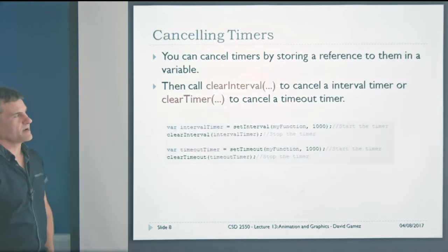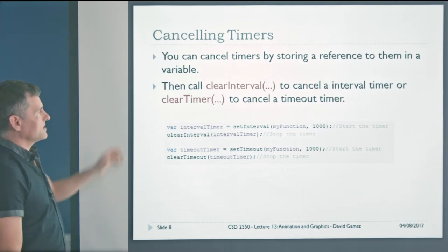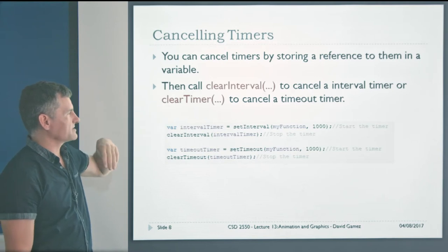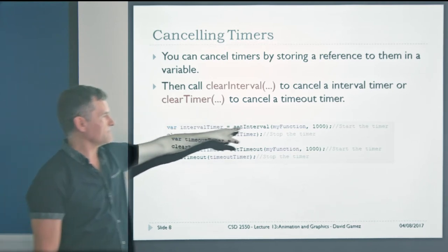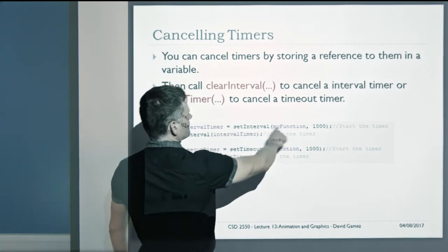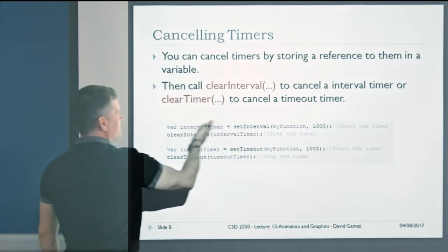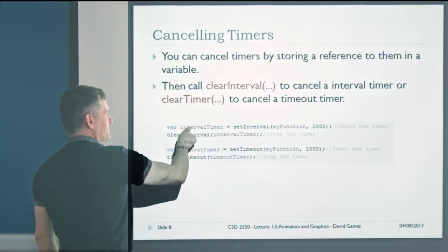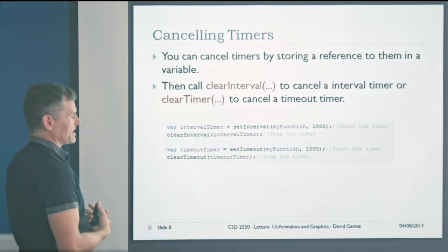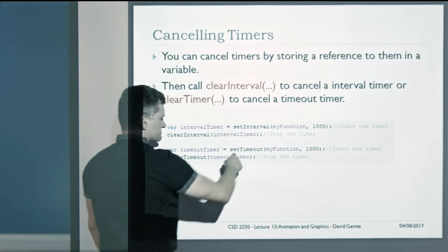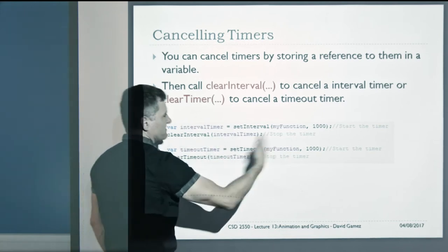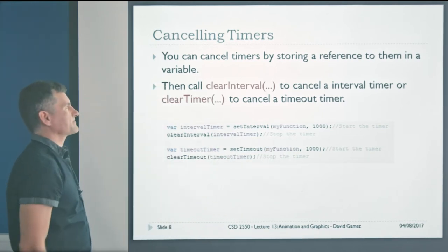We can cancel timers if we store a reference to them. We can call clearInterval to cancel an interval timer, or clearTimeout to cancel a timeout timer. When we call setInterval to start the timer, it returns a reference to the timer, and we can use that reference to stop the timer by calling clearInterval. Similarly, if we call setTimeout, that returns a reference to the timer, and we can call clearTimeout to stop it.